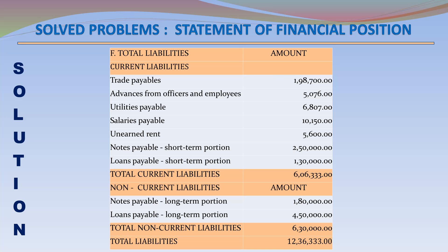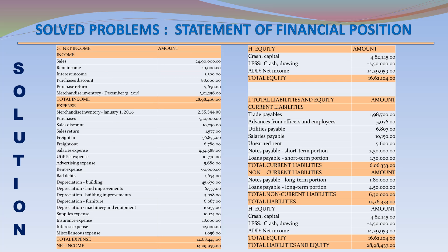Total Liabilities – 1,236,333. Net Income calculation — Revenue: Sales – 2,490,000; Rent Income – 10,000; Interest Income – 1,500; Purchase Discount – 88,000; Purchase Return – 76,50; Merchandise Inventory December 31, 2016 – 301,256. Total Income – 2,898,406.